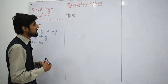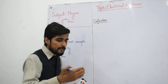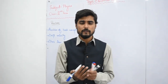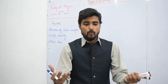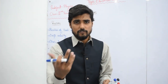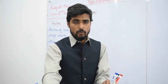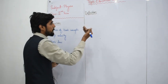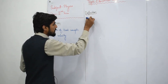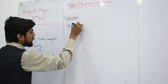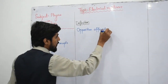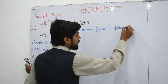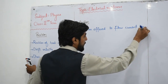Now let us start electrical resistance as a topic with its formal definition. In any conductor, when current flows — because you have applied an external voltage source — that current, as it flows through the material, faces some opposition from that material. That opposition which is offered to the flow of electric current by the material in which the current is flowing is called the electrical resistance. In simple words, it is the opposition offered to the flow of current by the material in which the current is flowing.